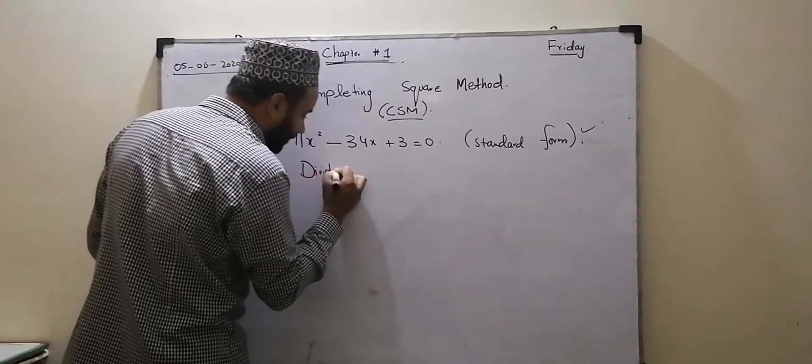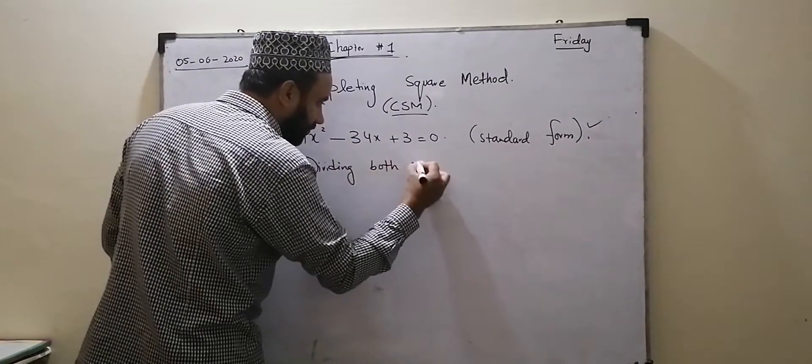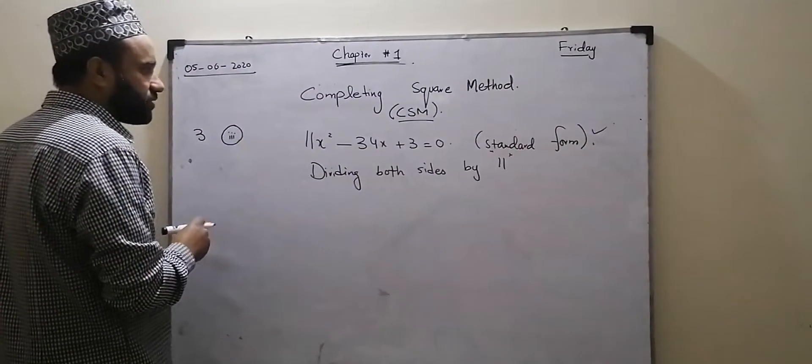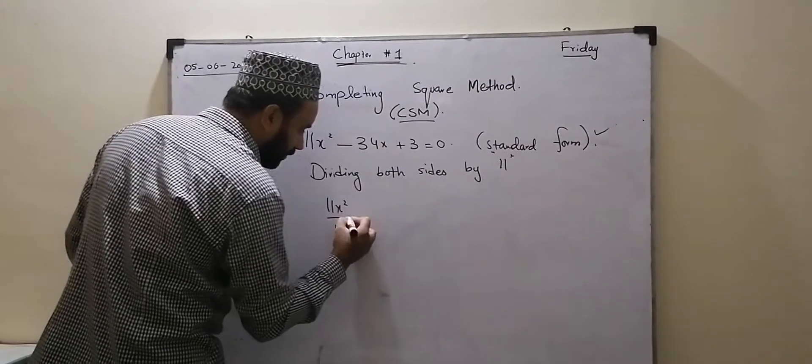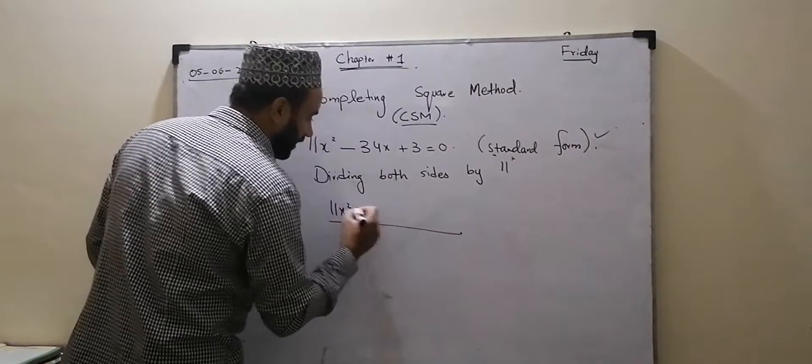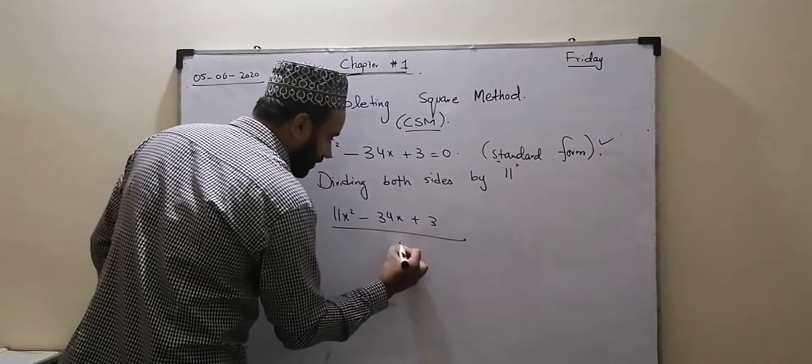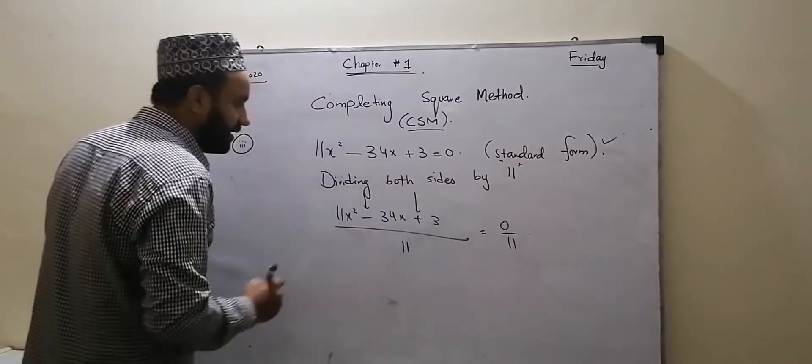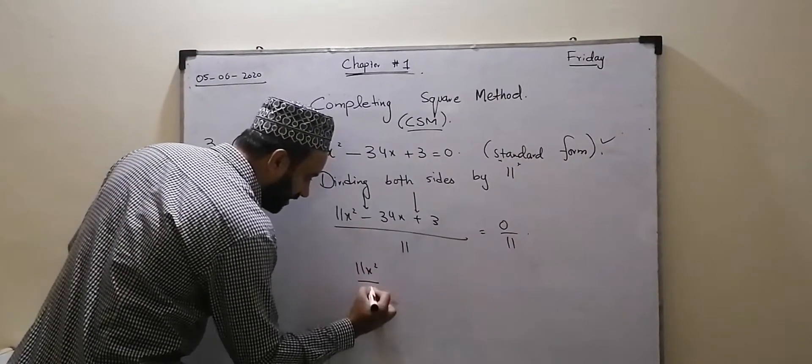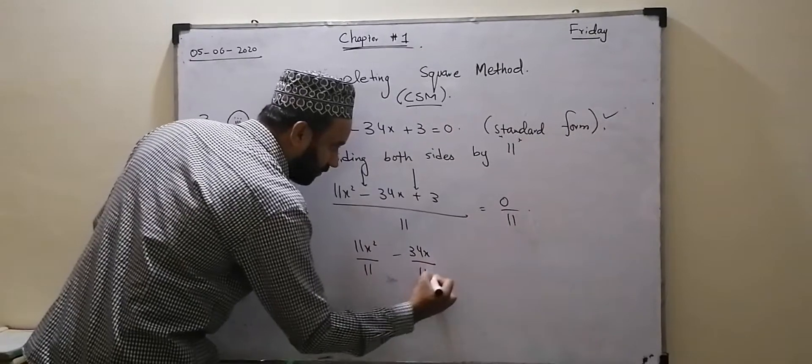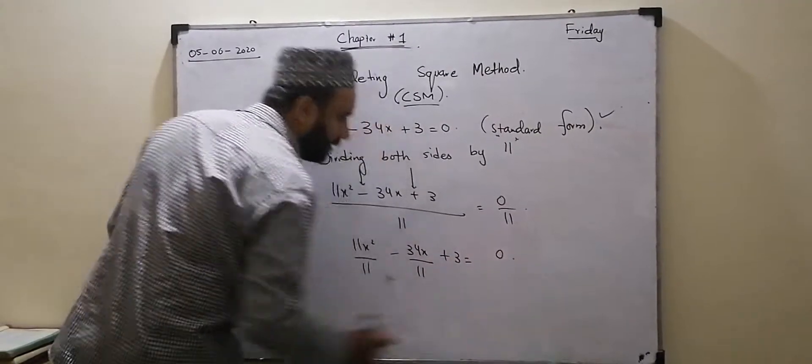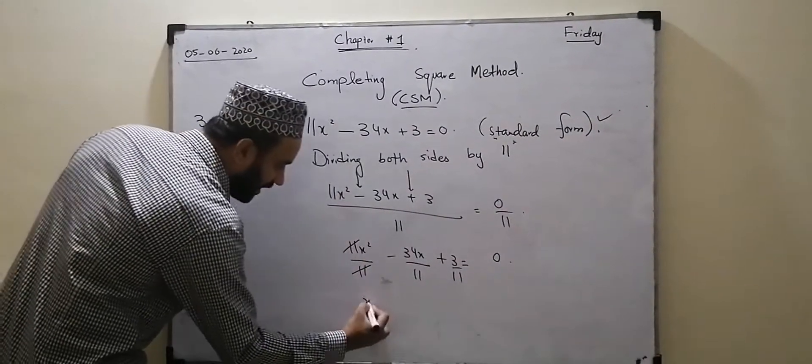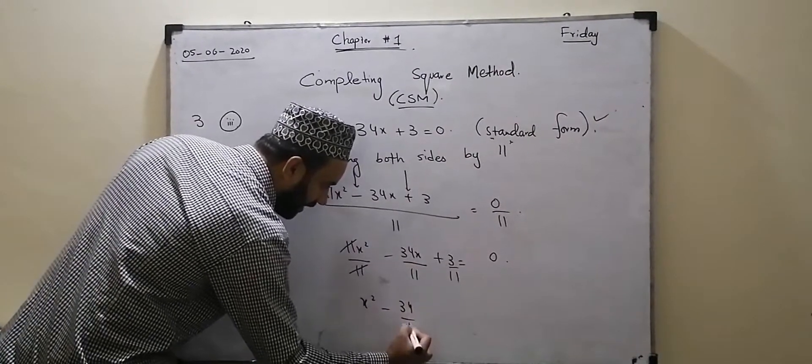The same principle means dividing both sides. x² by 11, I will divide it with 11. If we do this, minus 34x plus 3 divided by 11 equals to 0 by 11. Now we can break the fraction. 0 by 11 becomes 0. x² minus 34 by 11 x.